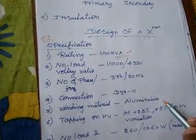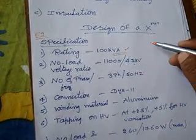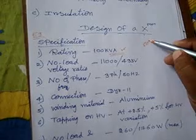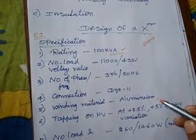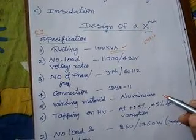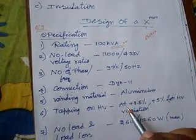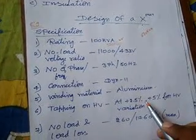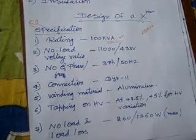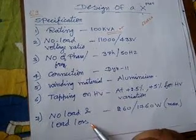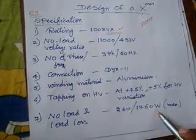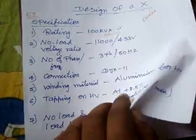Winding material is aluminum. Generally for lower ratings like 630 kVA, we use aluminum winding. Tapping at 2.5%, no load loss and load loss, core loss and load loss 260 by 760. These are the details which are given by the customer.